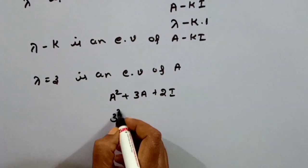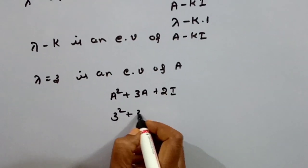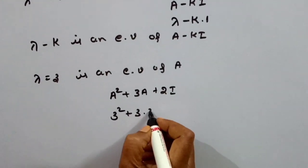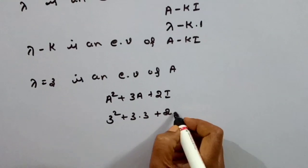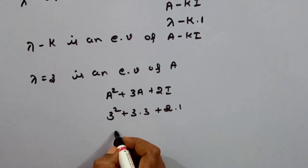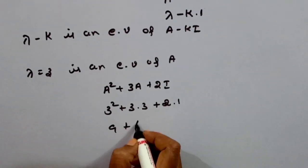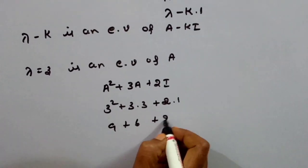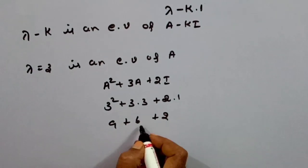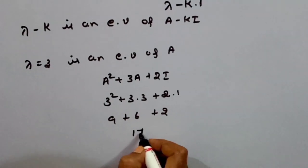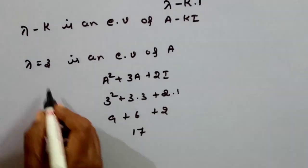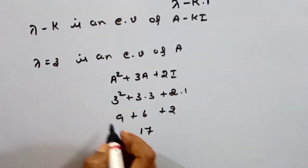Substituting lambda equal to 3 into the polynomial: 3 squared plus 3 times 3 plus 2, which gives 2 times 1. Therefore, 9 plus 6 plus 2 equals 15 plus 2, which equals 17. This value corresponds to lambda equal to 3.